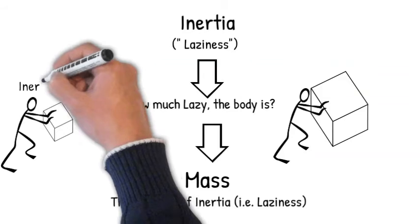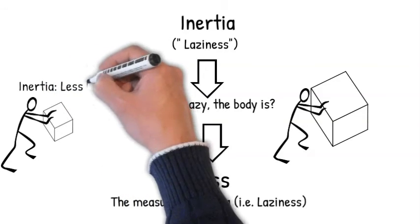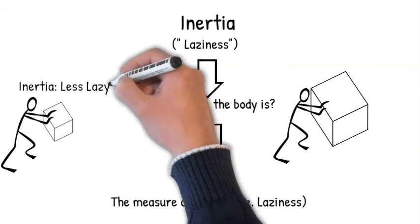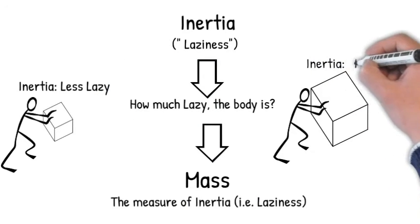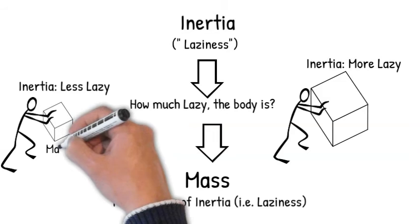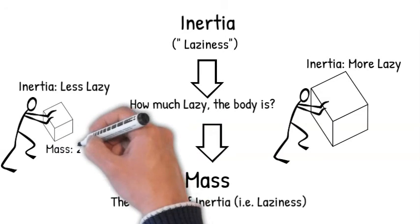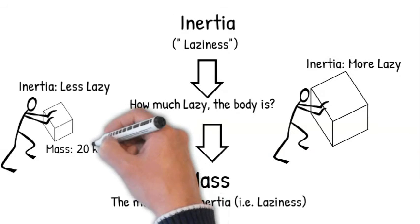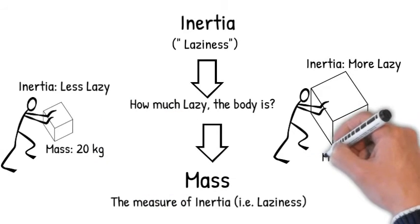Now, the small box has less laziness, meaning less inertia, and the larger cube has more laziness, so it has more inertia. Suppose the small box is 20 kg and the larger cube is 80 kg.